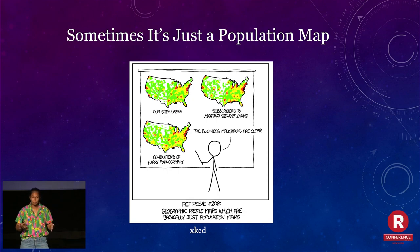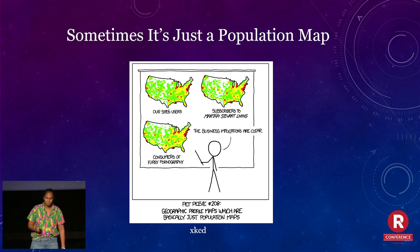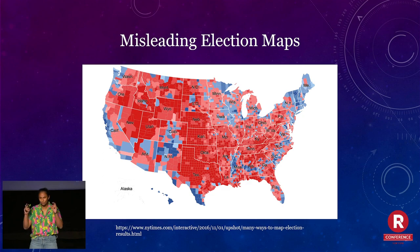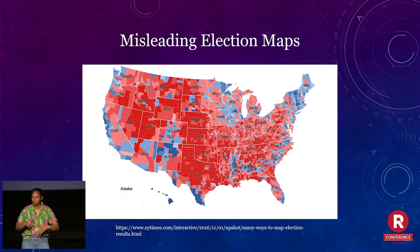Sometimes you haven't really found a geospatial pattern — it's just a population map. A bunch of my GIS friends sent me this cartoon because it's so true. Misleading election maps — I see these every year. This is always a quote-unquote 'own the libs' map because of all the red. But in reality, a lot of these areas are not densely populated, so it makes you think everyone voted red, but it's just a population density map.